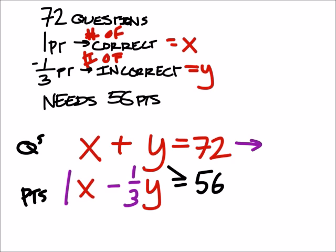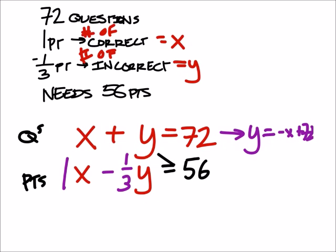What this means is that I'm going to change this equation into slope-intercept form. So I've got Y equals negative X plus 72.